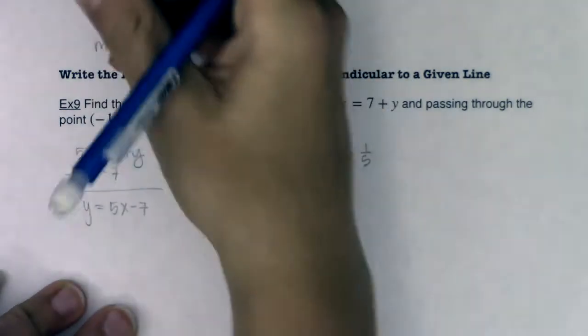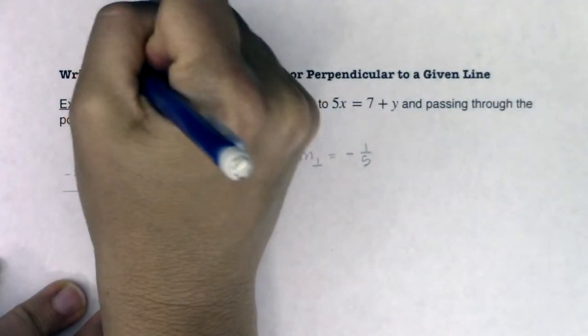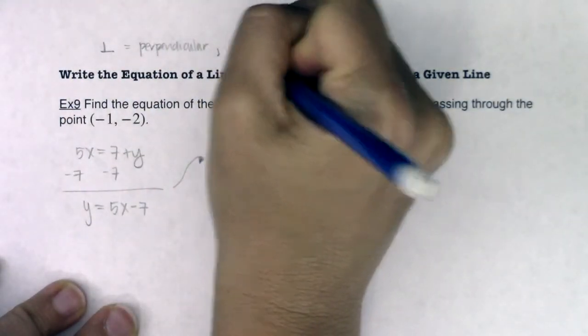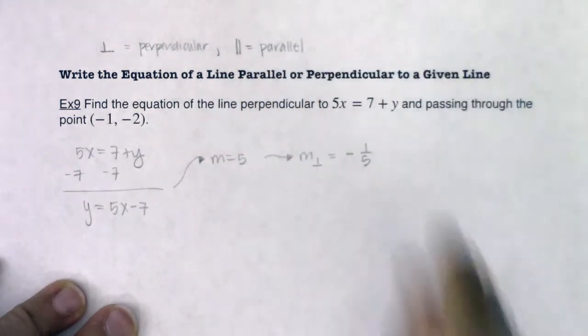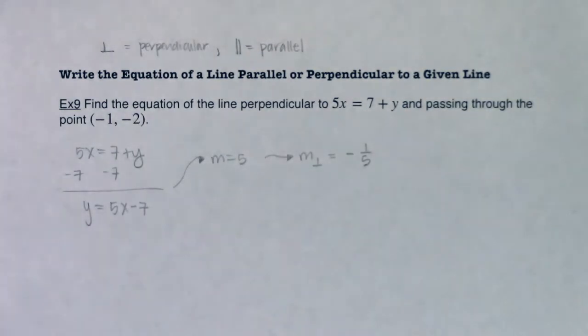And really, I'm just going to write the little upside down t. That's the symbol for perpendicular. If you ever see two lines written like that, they mean parallel. And maybe you've seen that in a geometry class, maybe not, but that's some pretty common notation in math.